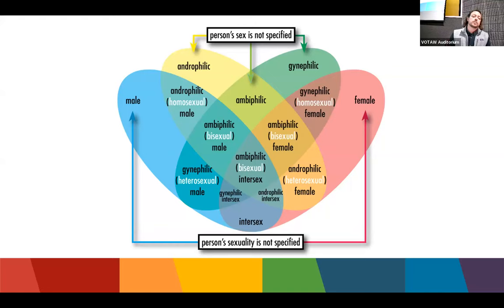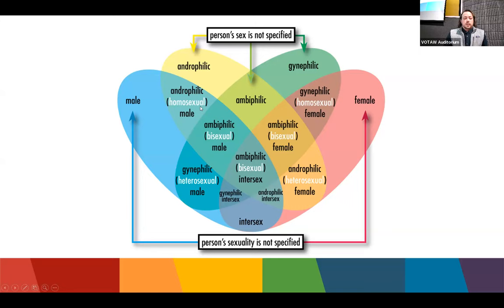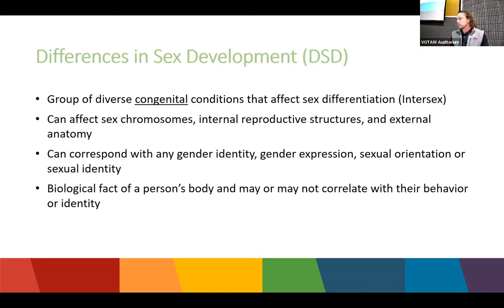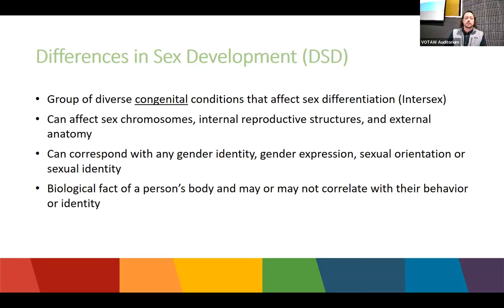Here's another complex picture showing who you're attracted to versus how you identify — I like it because it really shows the complexity of sex, attraction, and gender all together. Differences in Sex Development (DSD) is the new term for intersex disorders — a general term for people born with reproductive or sexual anatomy that doesn't fit typical male or female. These are congenital; people have no choice. DSDs can affect sex chromosomes, internal reproductive structures, or external anatomy, and can correspond with any identity, expression, or orientation.